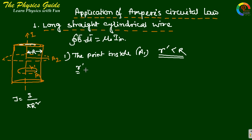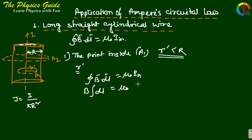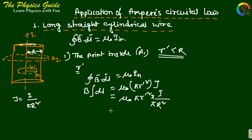Taking the Ampere loop at radius r-dash, the line integral B dot dl equals mu-naught times I enclosed. Since B is constant at radius r-dash, we take B outside the integral. The enclosed current equals the current density times the enclosed area: I enclosed equals J times pi r-dash squared, which equals mu-naught times pi r-dash squared times I divided by capital R squared.